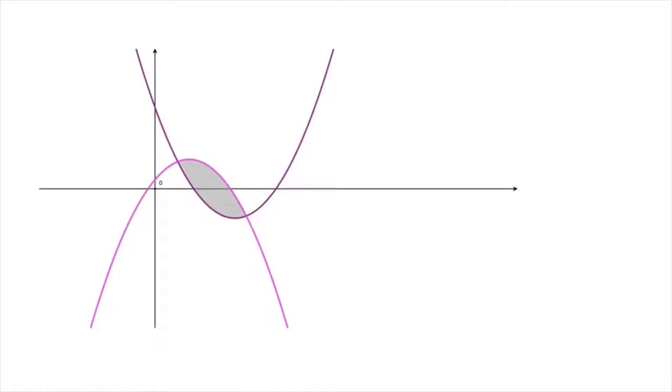Now to calculate this area, the first thing we'll always need to do is make sure we know the x-coordinates of the points of intersection of the two curves. Looking at the graph we have here, the points of intersection would be this point and this point. Let's say these points have x-coordinates a and b. These x-coordinates are the first thing we'll need to make note of.